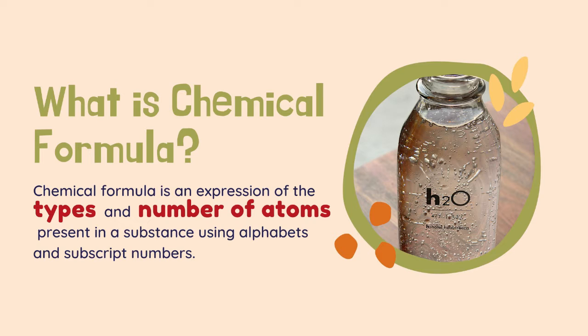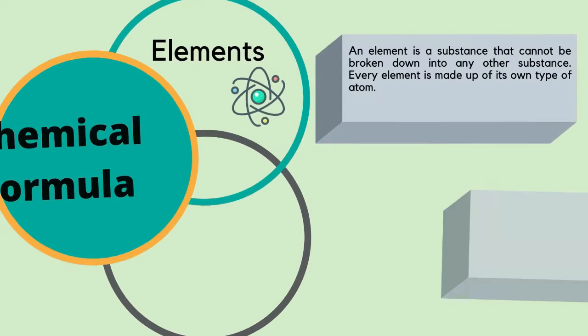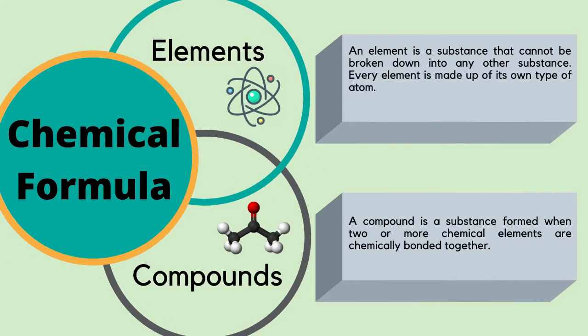A chemical formula is an expression of the types and numbers of atoms written in a substance using alphabet letters and subscript numbers. It can be divided into elements and compounds. An element is a substance that cannot be broken down into any other substances, and every element is made out of its own types of atoms. A compound is a substance formed when two or more chemical elements are chemically bonded together.